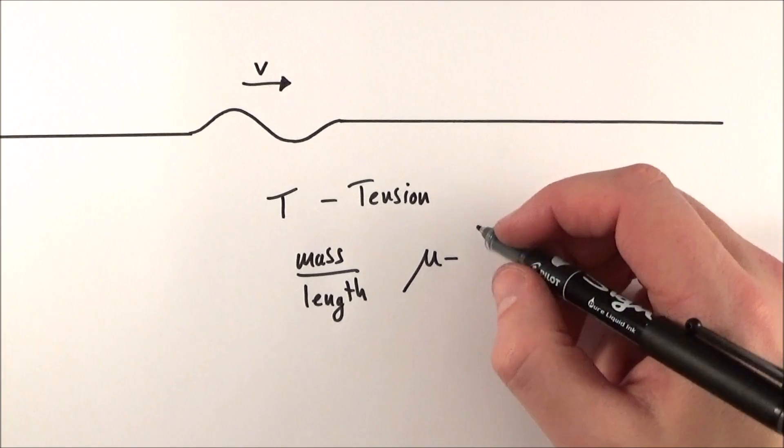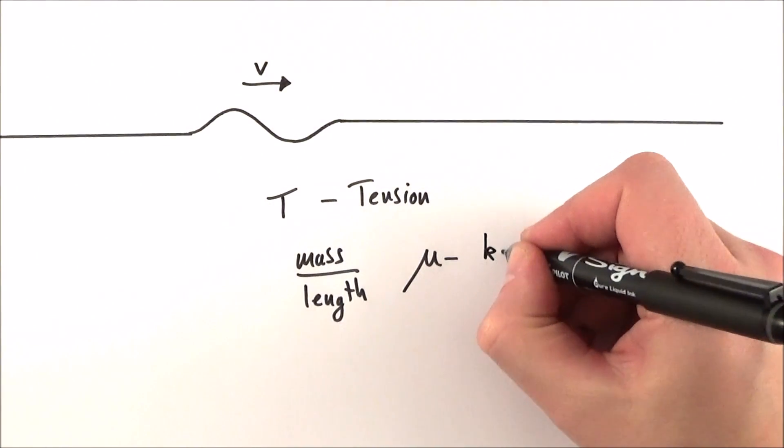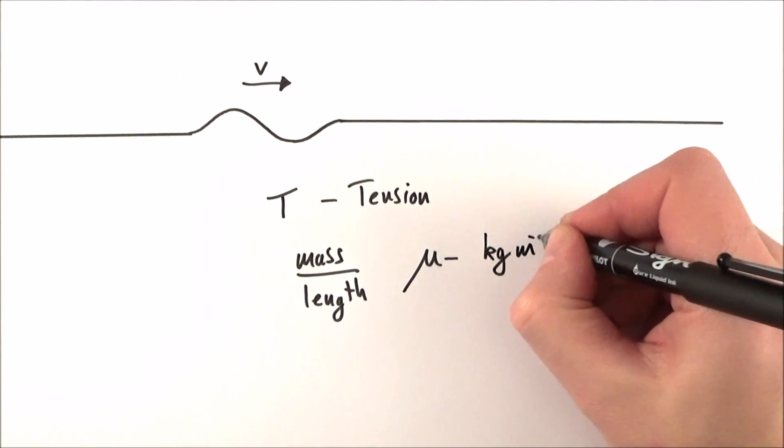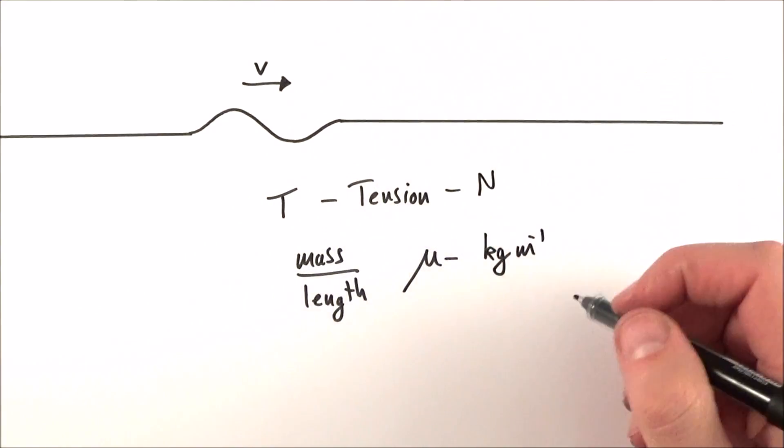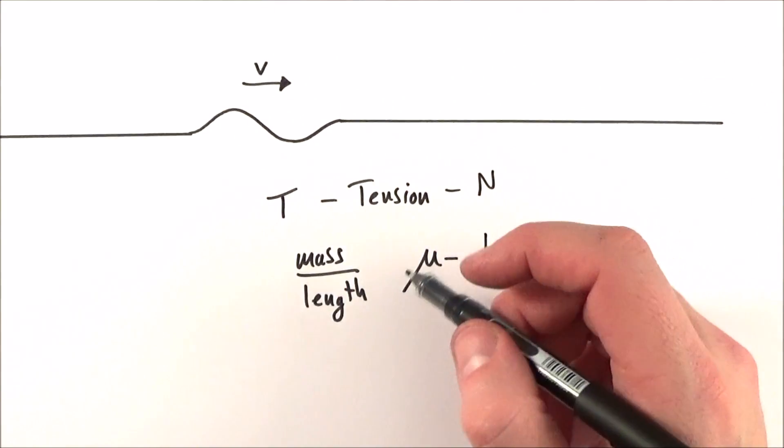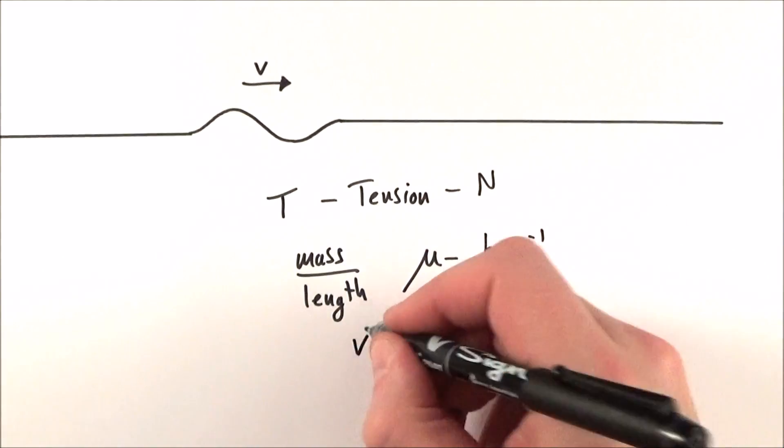So this symbol mu is measured in kilograms per meter, and tension is measured in newtons. And these are somehow linked to the velocity of the wave.